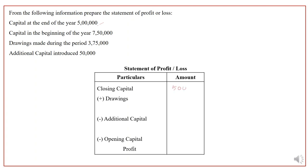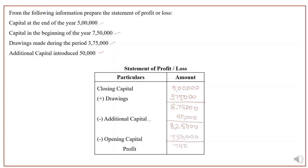We add drawings of 3 lakhs 75,000 to the closing capital of 5 lakhs, giving 8 lakhs 75,000. Then deduct additional capital of 50,000, giving 8 lakhs 25,000. Finally, deduct opening capital of 7 lakhs 50,000. The resultant answer is 75,000, which is positive, so this is a profit of 75,000 rupees.